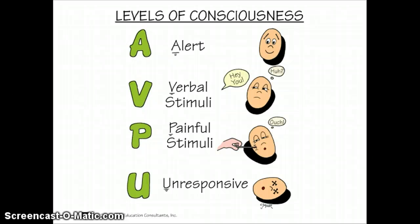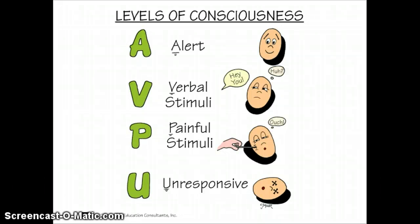A key that is good to know as far as level of consciousness goes is called AVPU. A is Alert — you can walk in the room and the patient is fully alert, conscious, and can answer questions. V is Verbal stimuli — you may have to walk in and say the patient's name to get them going; they might be a little slow to respond. P is Painful stimuli — you're going to do something painful, such as sternal rubs, pinching of the nail beds, or shaking their arms to get them to wake up. U is Unresponsive — and that's where we do not want to see our patients headed.